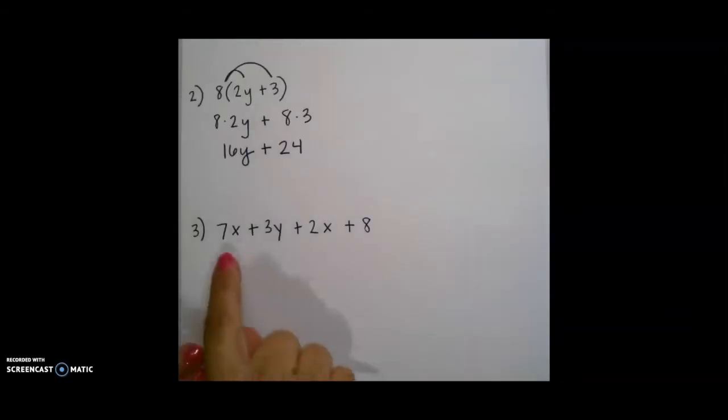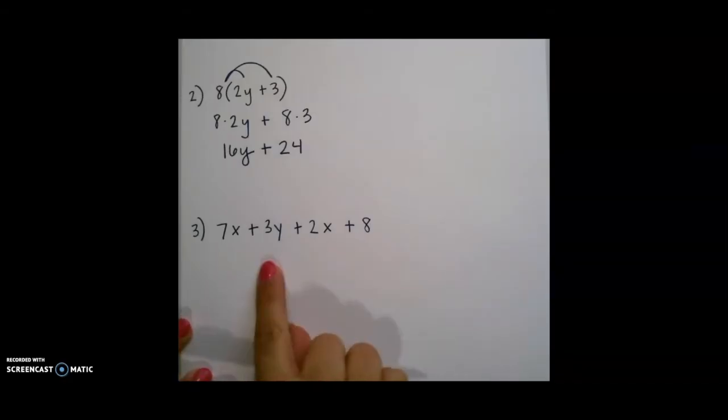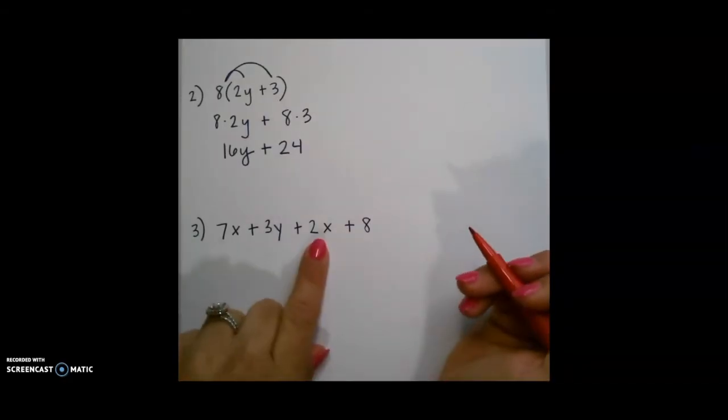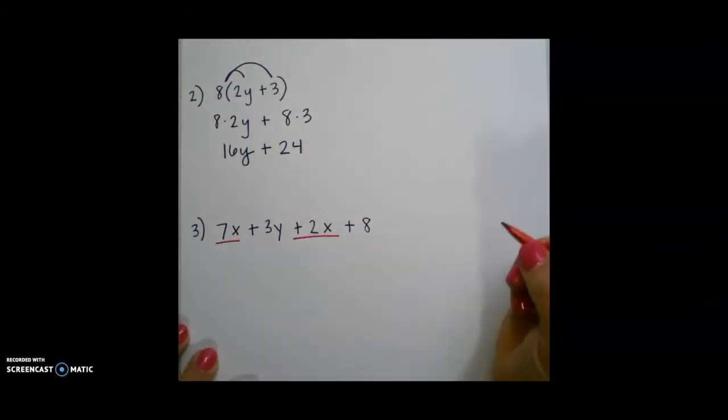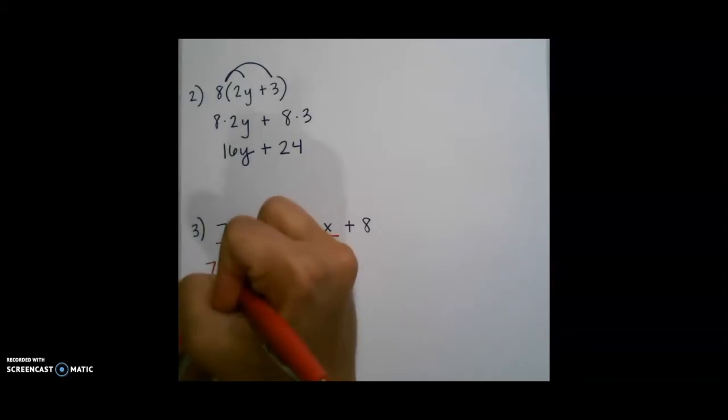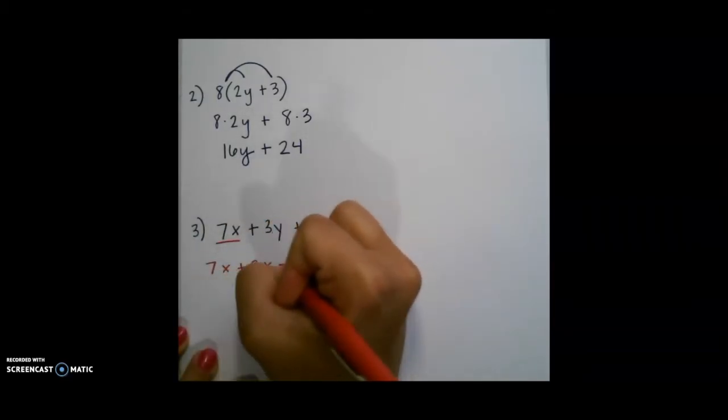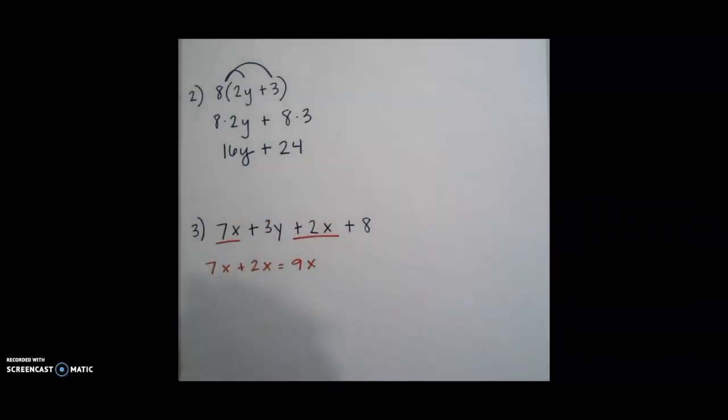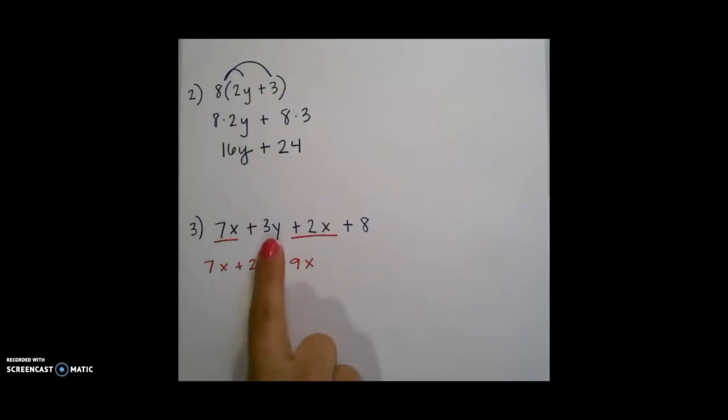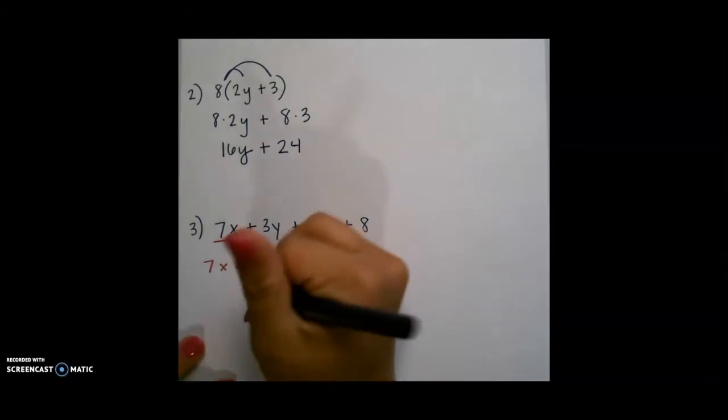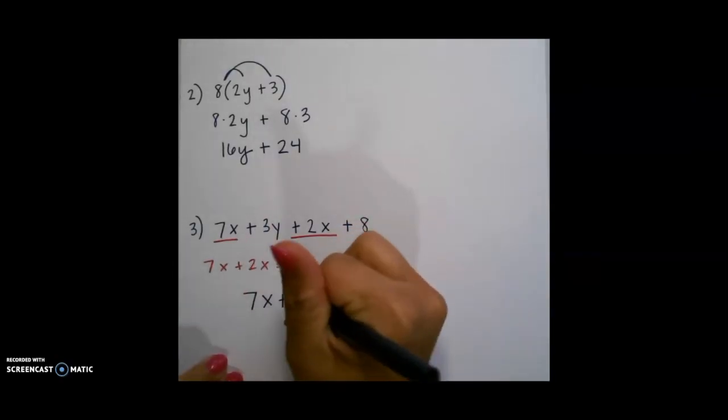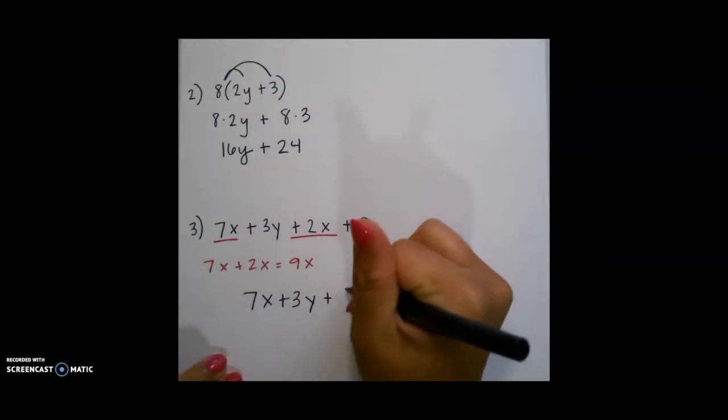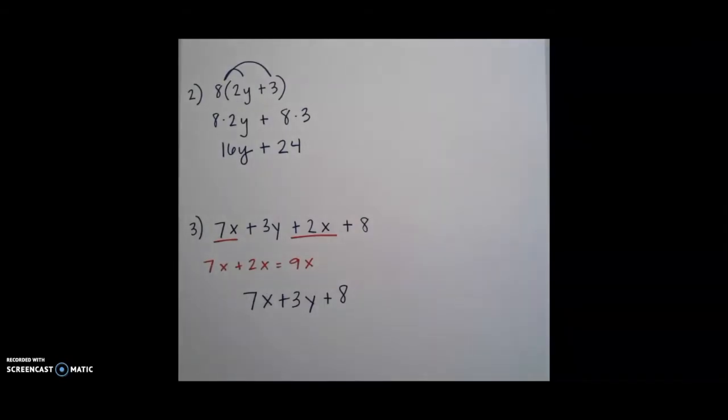For our next expression, you want to start with deciding what our like terms are. I see two terms with x, 7x and plus 2x. I will add these two together to get 9x. I do not see any other like terms with these, so I am going to simply bring those down with the sign for my final simplified answer.